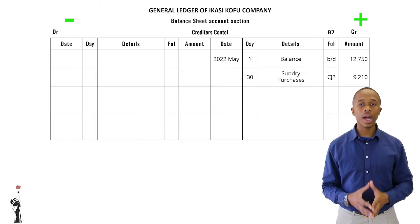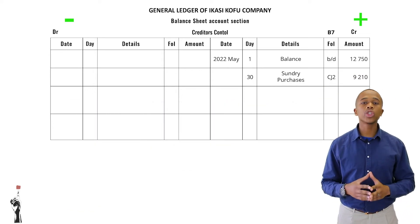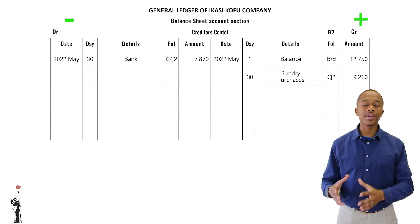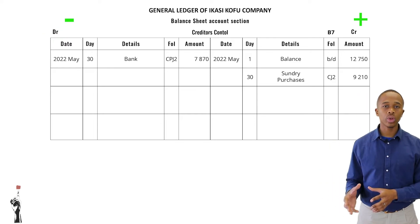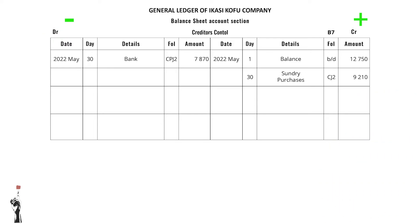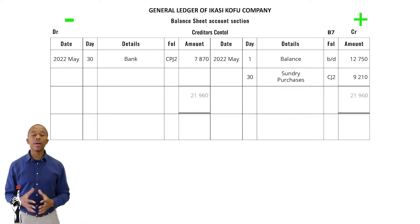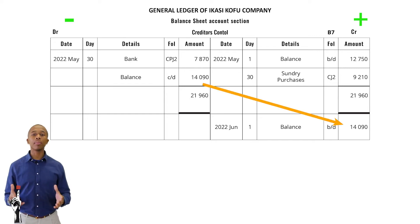At some point we should pay our accounts — this will be recorded on the debit side of the creditors control. The creditors control will decrease as Ikasu Kofu Company is paying their debt. Remember to balance the creditors control at the end so we can see how much we still owe.